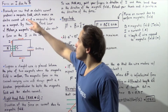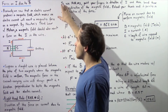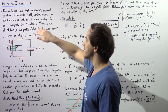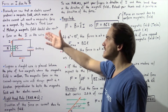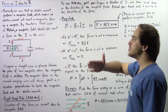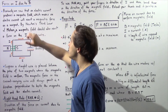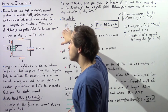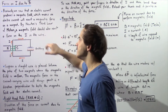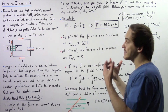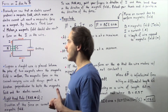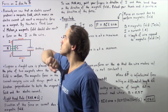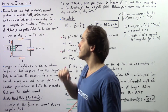So once again, previously we saw that an electric current produces a magnetic field, which means an electric current will exert a magnetic force on our magnet placed next to our wire. Now by Newton's third law of motion, a magnetic field should also exert a force on an electric current found inside a wire. So that's exactly what we're going to discuss in this lecture — the magnetic force acting on an electric current as a result of a magnetic field.